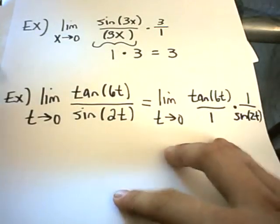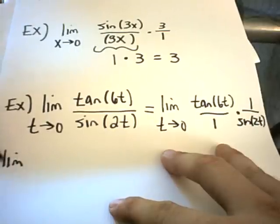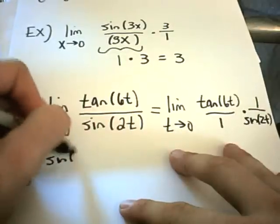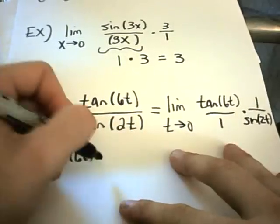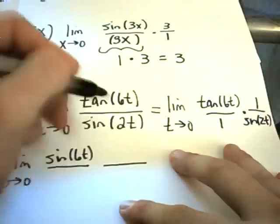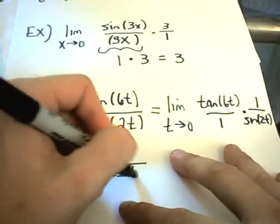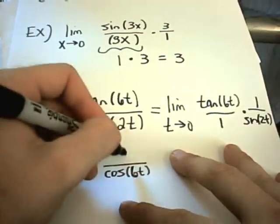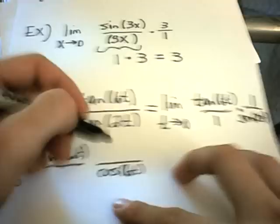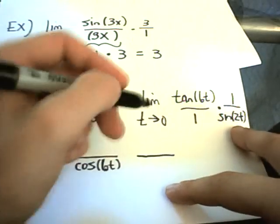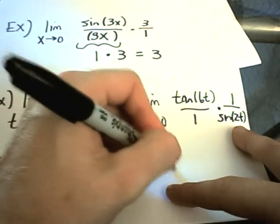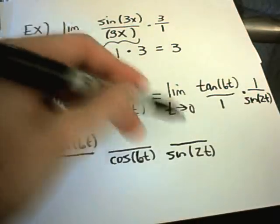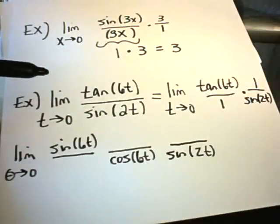Okay, and now I'm going to rewrite tangent. I can rewrite tangent of 6t as sine of 6t, and this is divided by cosine of 6t. I'm going to put the cosine of 6t over here. Okay, so this is over 1. You can think about a 1 being up here. And then I still have my original sine of 2t in the denominator.